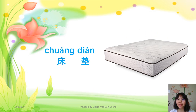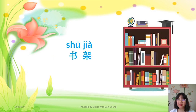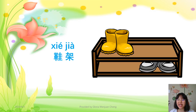床垫 — mattress. 床垫, fourth tone. 书架 — 书 means book, so 书架 is the bookshelf. 鞋架 — 鞋 means shoes, so 鞋架 is the shoe rack.